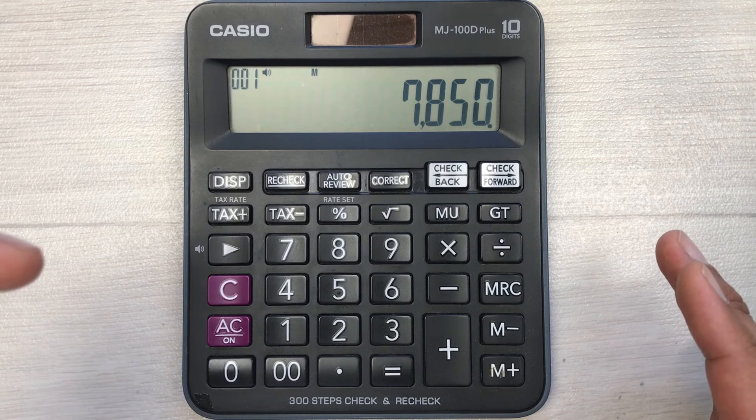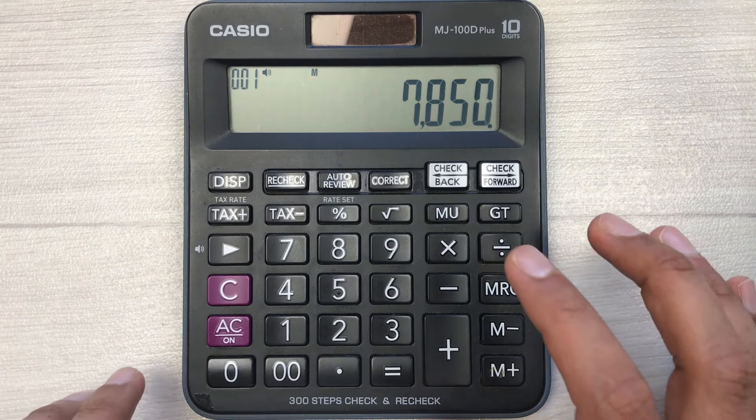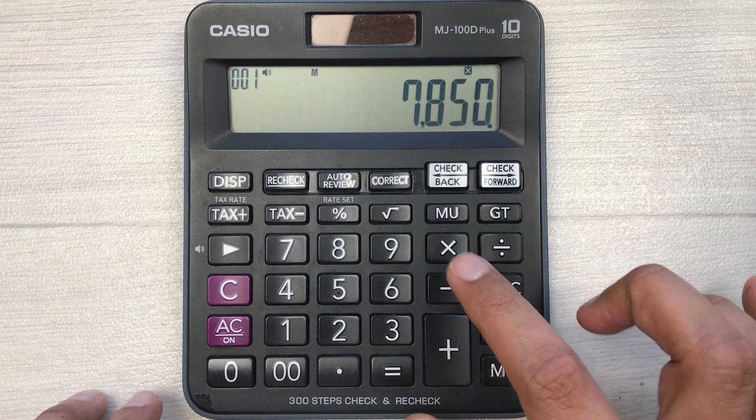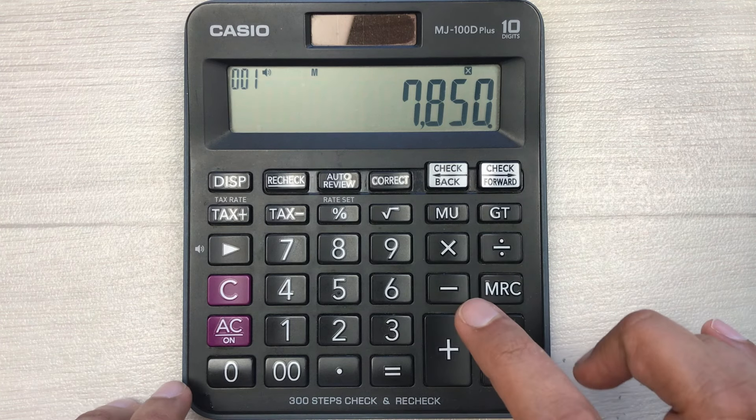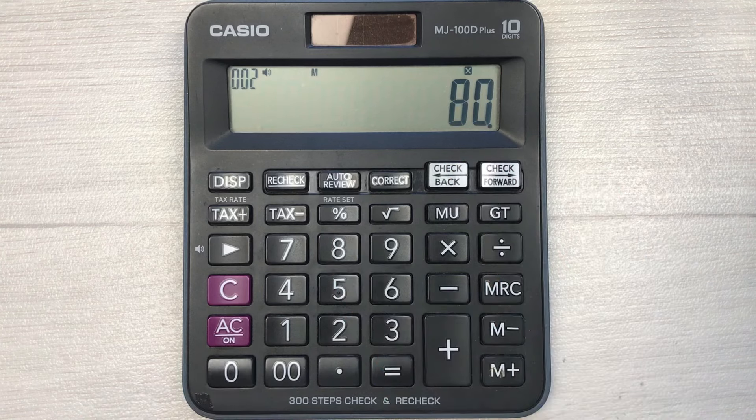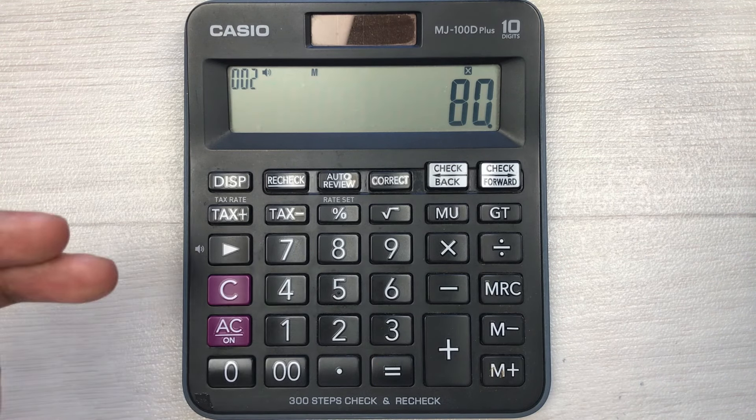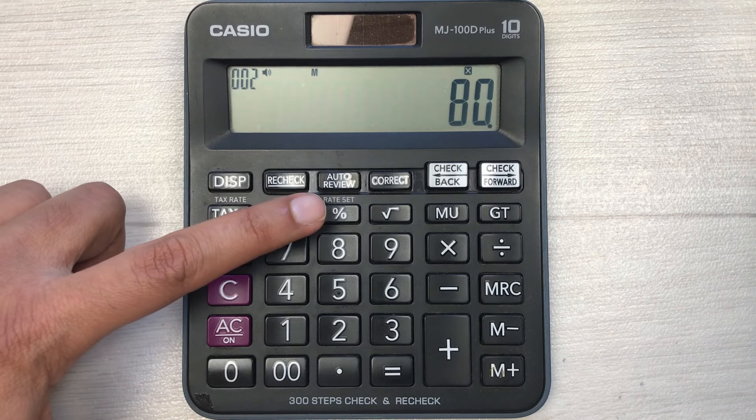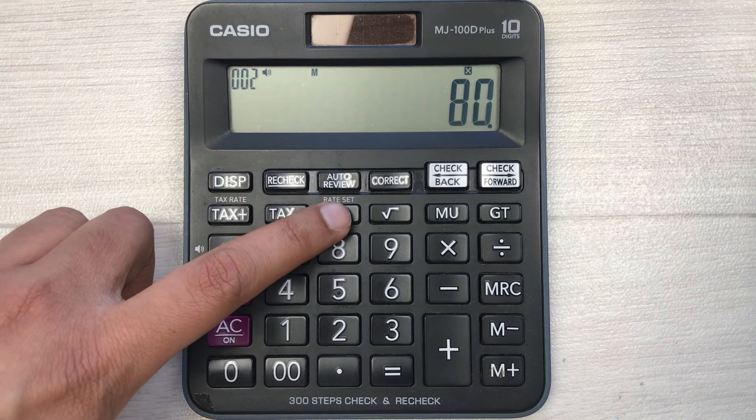You can do it in two simple steps. First of all, you have to multiply it with 80, so I press this multiply button. In the second step, you have to press this percentage button.